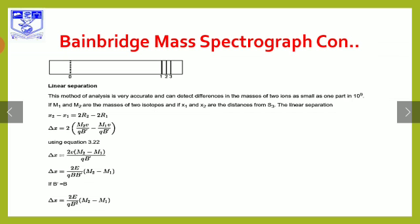This method of analysis is very accurate and can differentiate masses of two ions as small as one part in 10 to the power 9. M1 and M2 are the masses of two isotopes, and x1 and x2 are their respective positions, giving a linear separation.